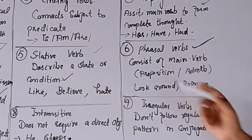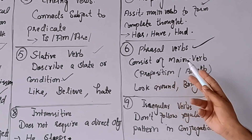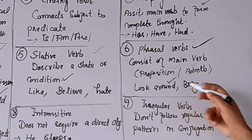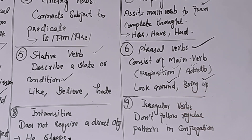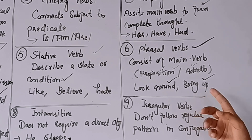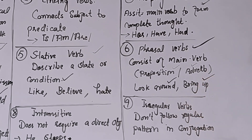The next essential type is phrasal verbs. Phrasal verbs consist of the main verb and a preposition or adverb — اس پر ہم نے ایک short video بھی بنائی ہے۔ Phrasal verb میں main verb کے ساتھ ایک preposition یا adverb مل کر اس main verb کی مکمل meaning کو change کر دیتا ہے۔ مثلاً 'bring' کا مطلب لانا ہے لیکن 'bring up' کا مطلب ہے پرورش کرنا۔ Native speakers spoken language میں phrasal verbs کا بہت زیادہ استعمال کرتے ہیں۔